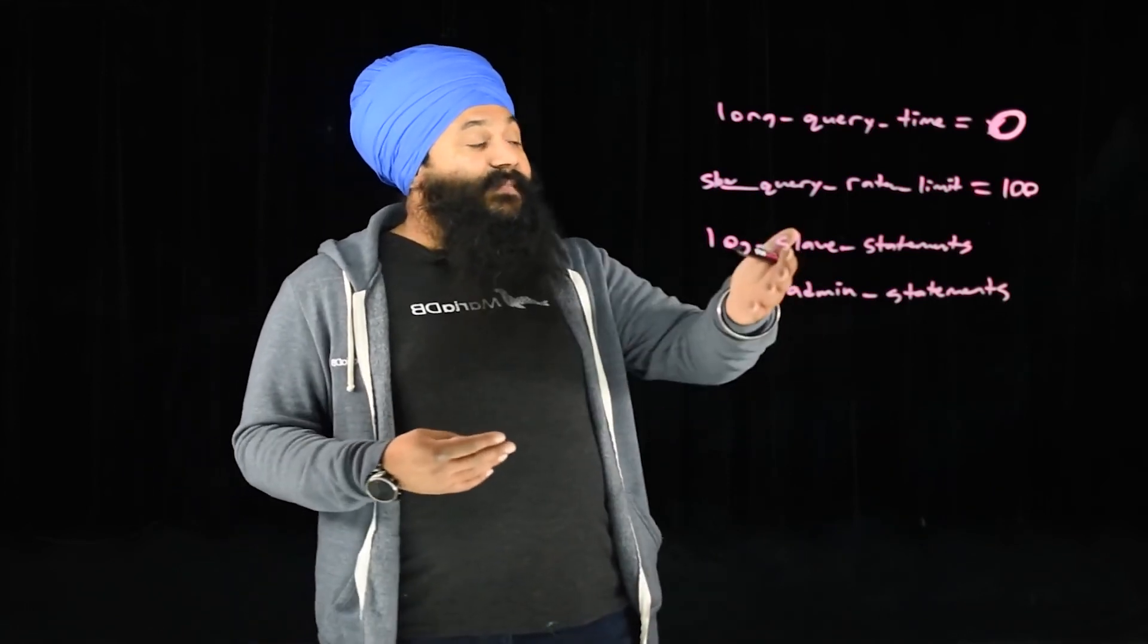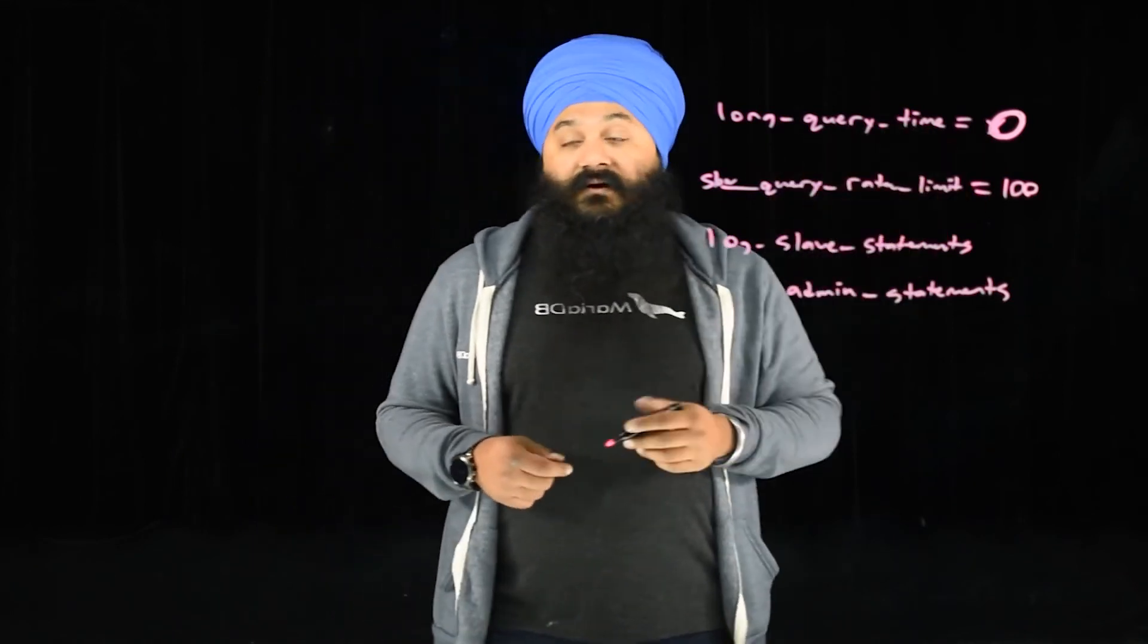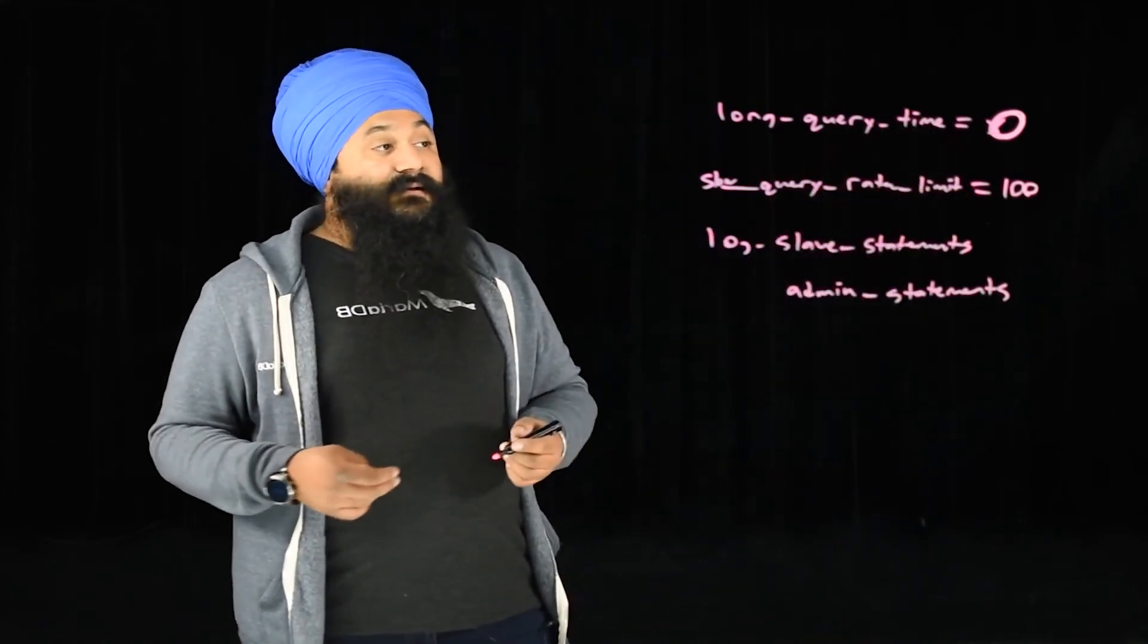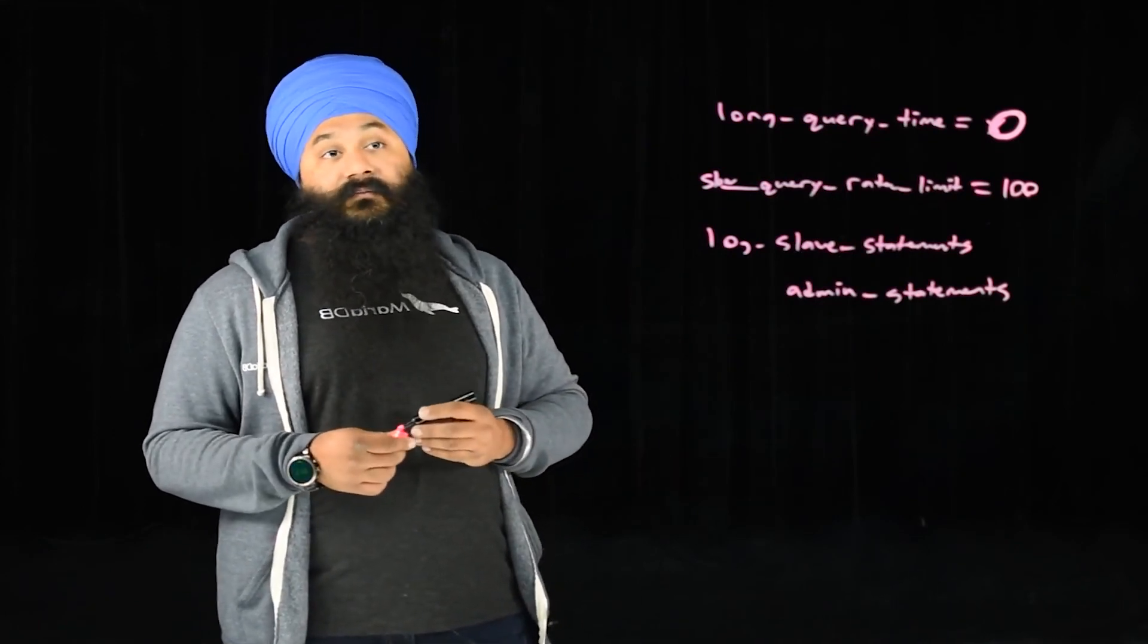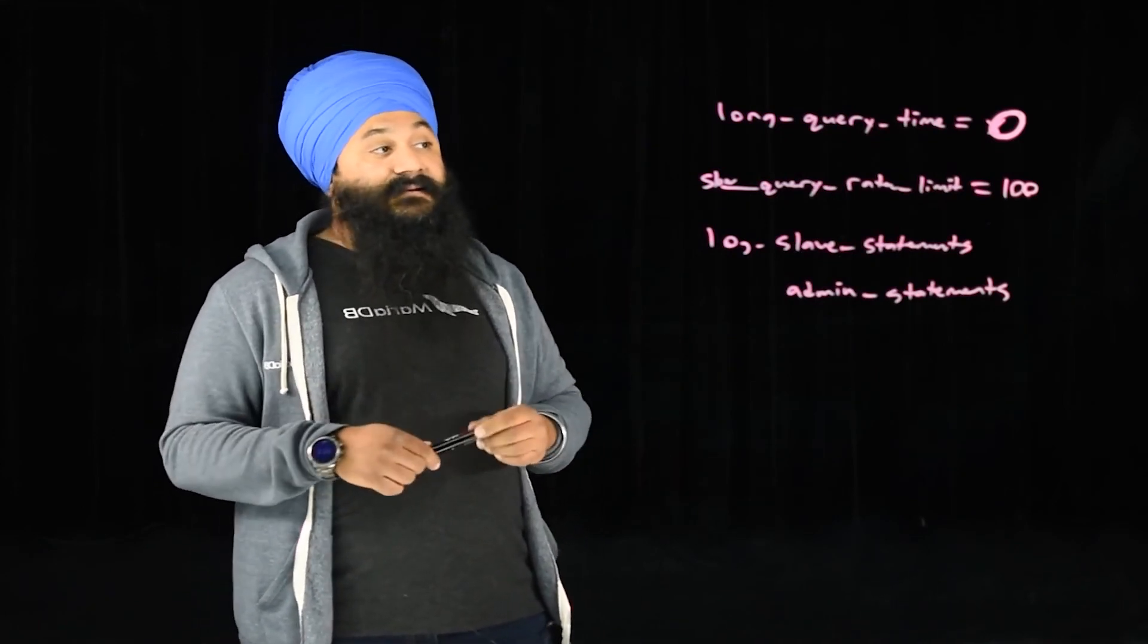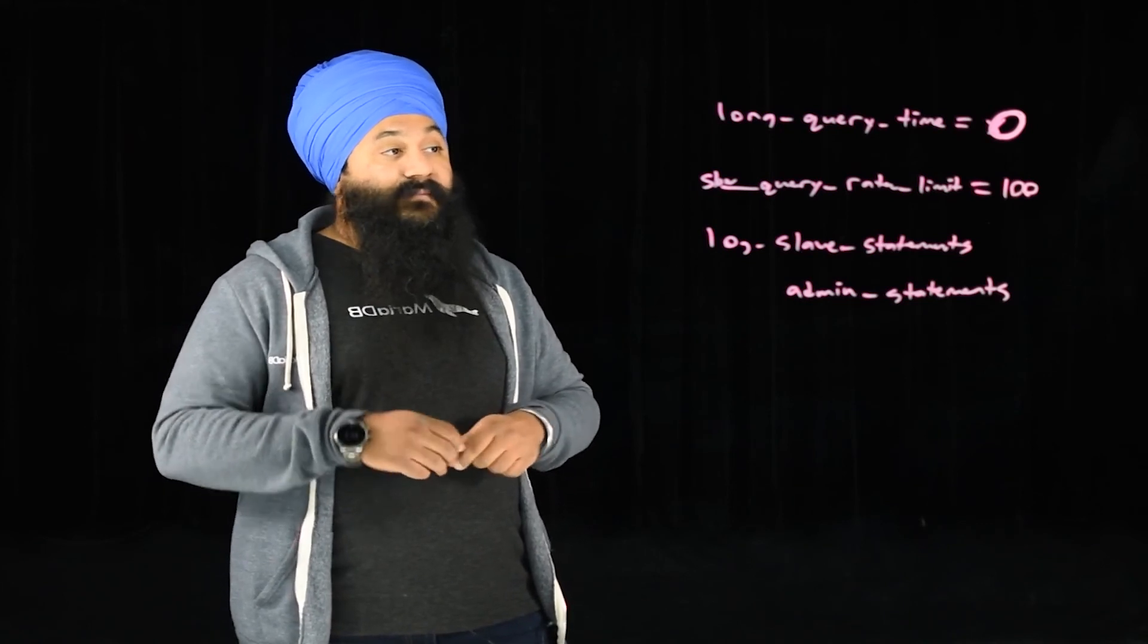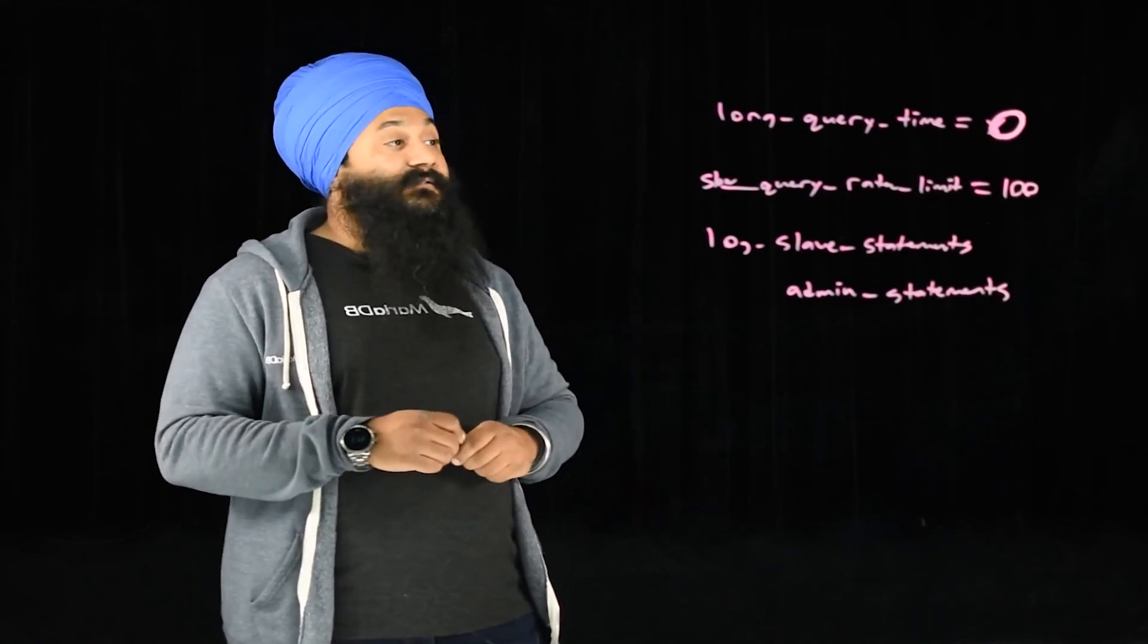So what we did with this client, he went through, he set the rate limit, he set his long query time to zero. And then we basically could do a count of how many times an update happened in that slow query log. And we had a good idea of what types of tables were touched, how they were touched and whatnot.